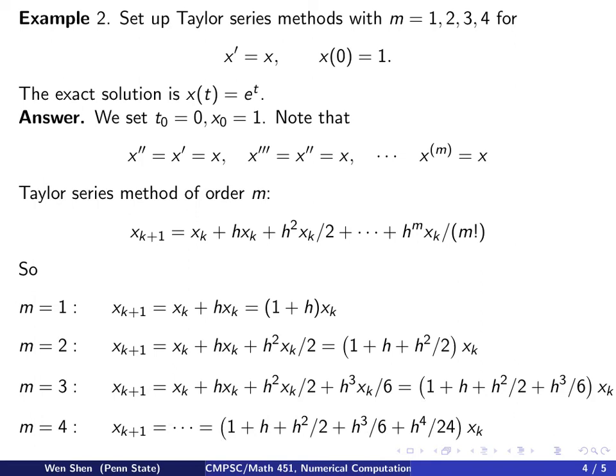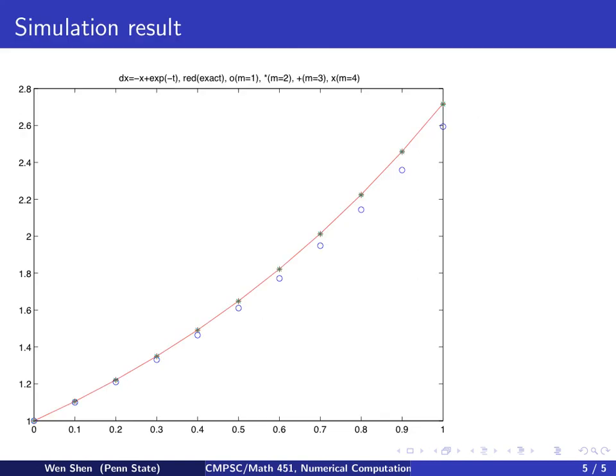And for M equals to 4, I will get five terms, and you take out xk, you can collect all the terms with h in the bracket in front of this xk. Actually, you can take many more terms, and each time you take a bigger M, you just have to add one more term.